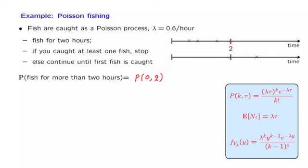So we're talking about the event that the first arrival T1 is bigger than two, and we're looking at the probability of this event, which is the integral of the density of the first arrival time.